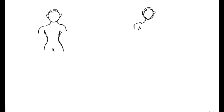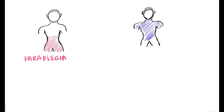In this video I am talking about only the complete transections of paraplegia and quadriplegia. Paraplegia means paralysis of part of the body — 'plegia' means paralysis and 'para' means half. Quadriplegia means four-limb paralysis — paralysis of all four limbs.